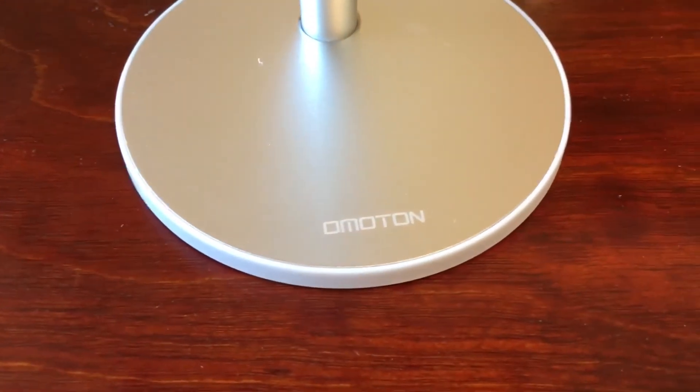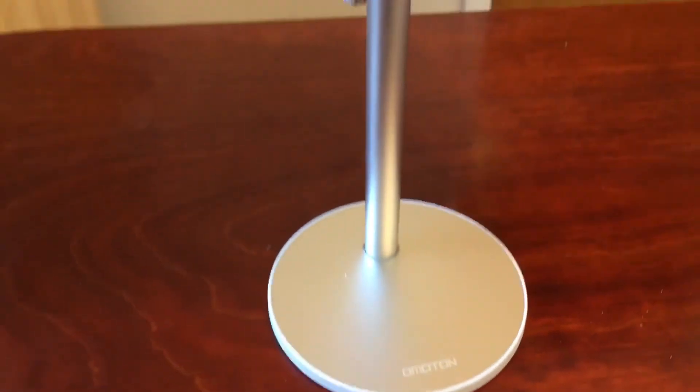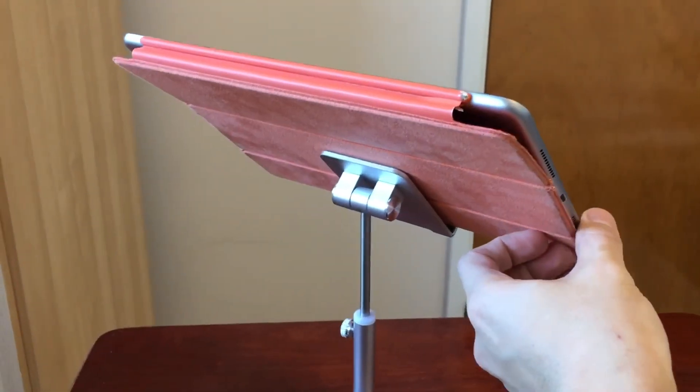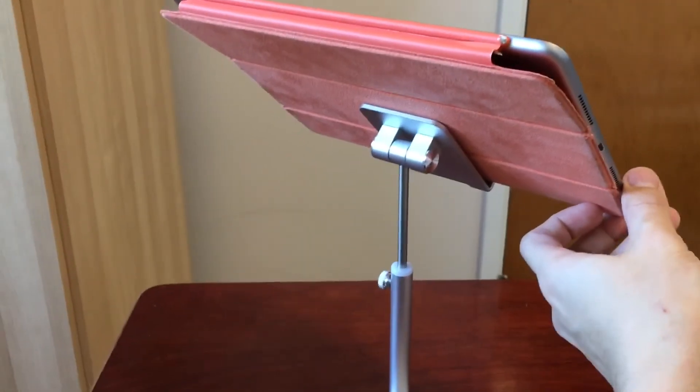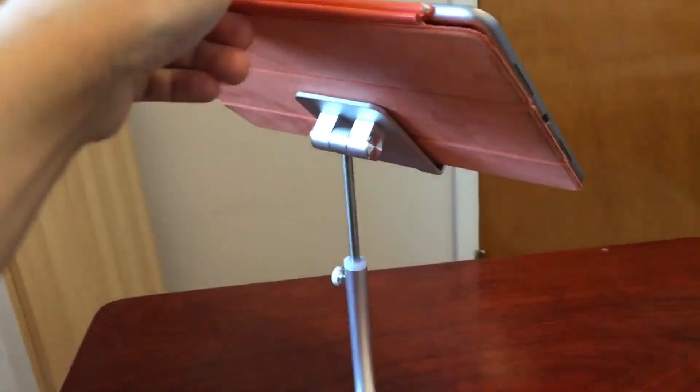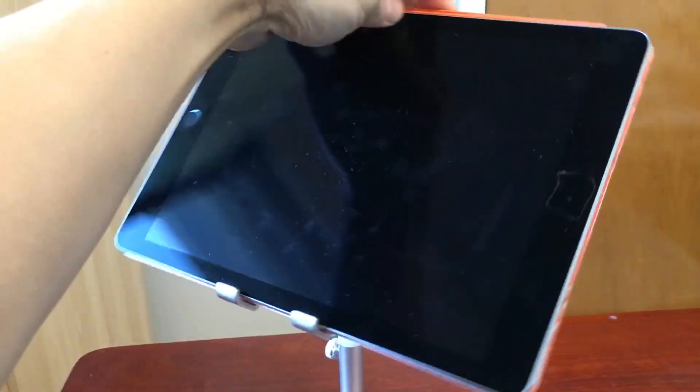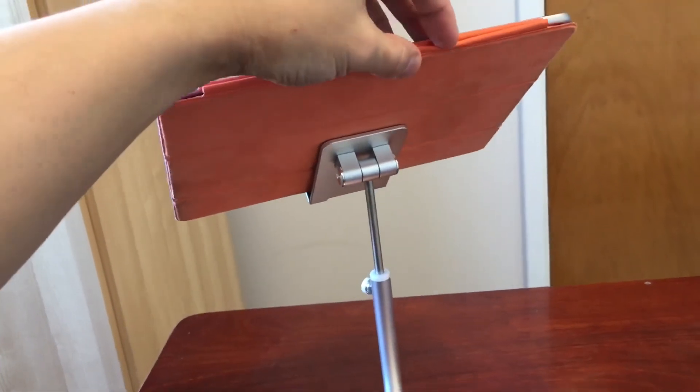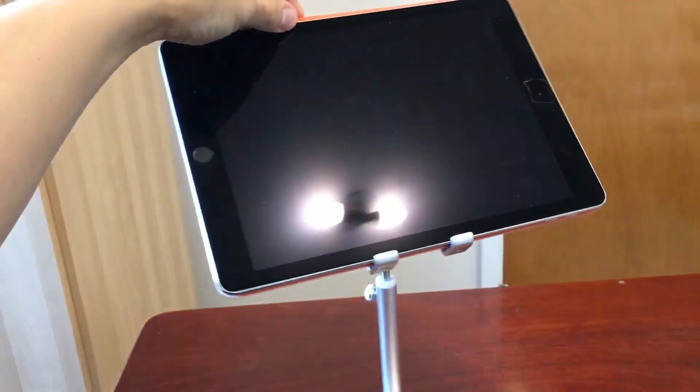And at the bottom here, we have the name of the company, Omotan. And then this can also swivel around just like that. And I even have the Apple cover on it. And it can hold the whole thing, no problem at all. Swivels around 360. Like that. So because it can hold a tablet, it can also hold a phone, no problem for sure.